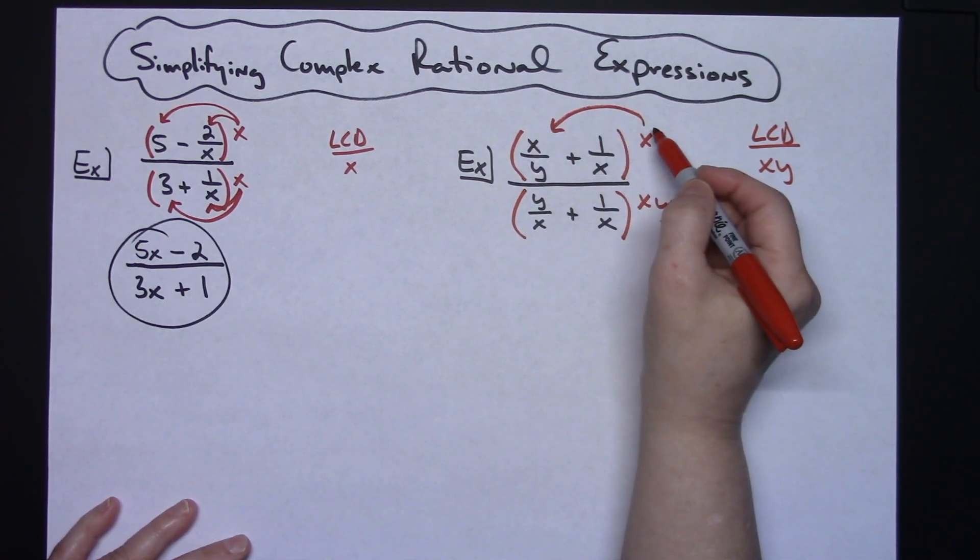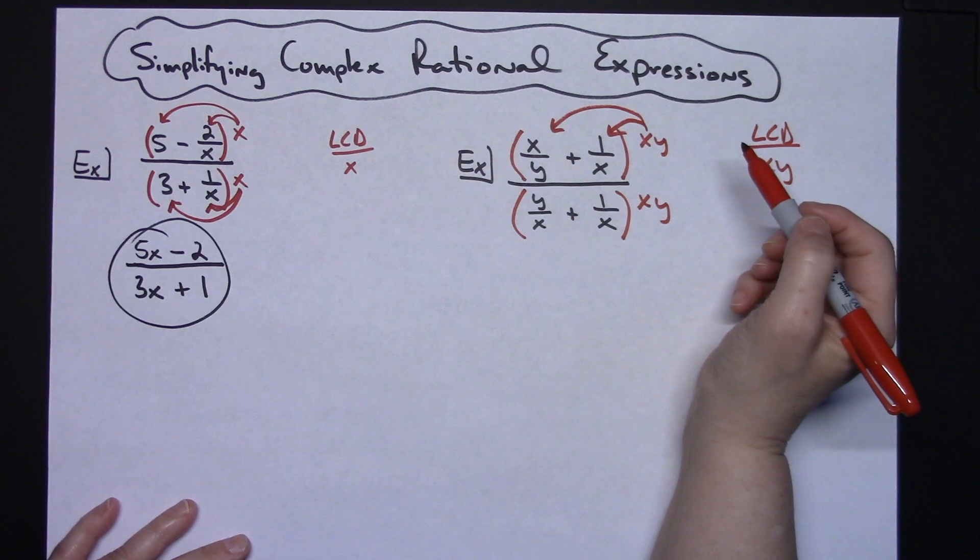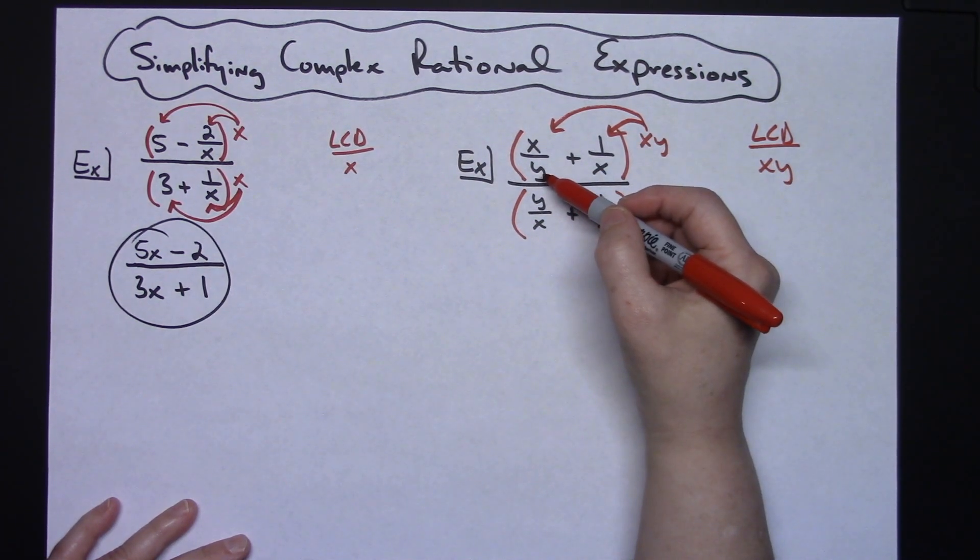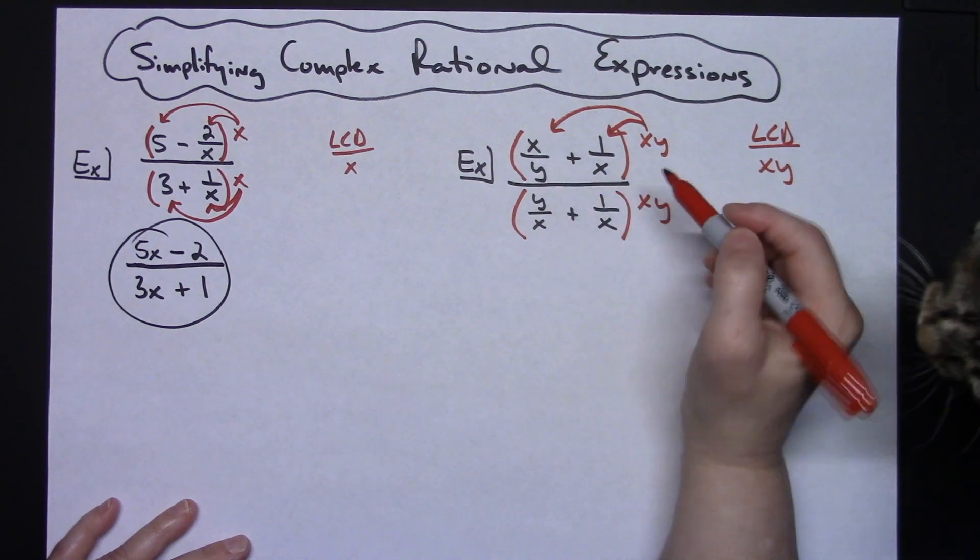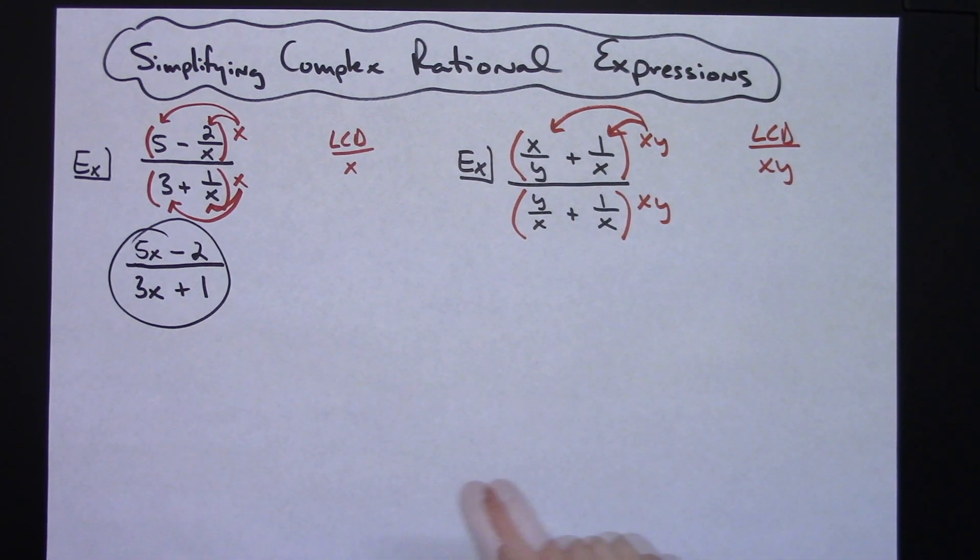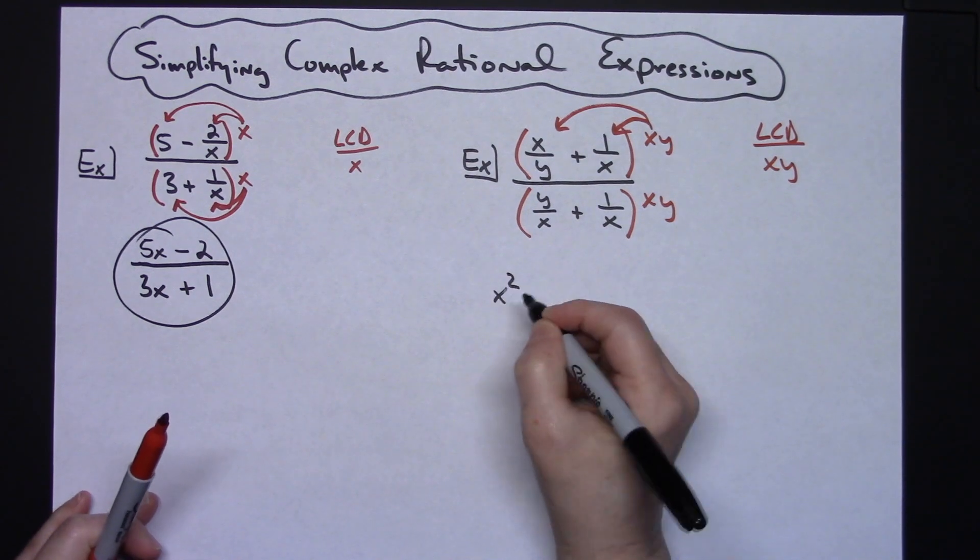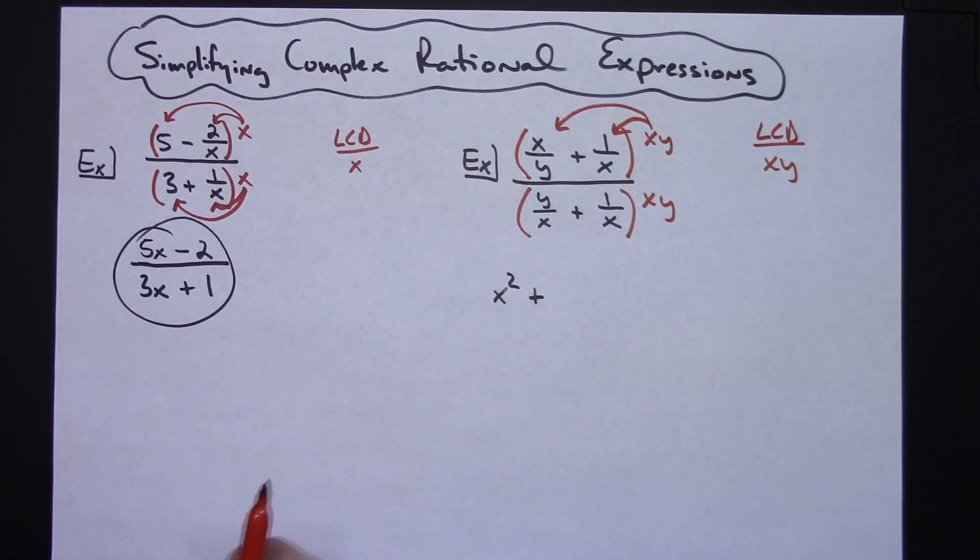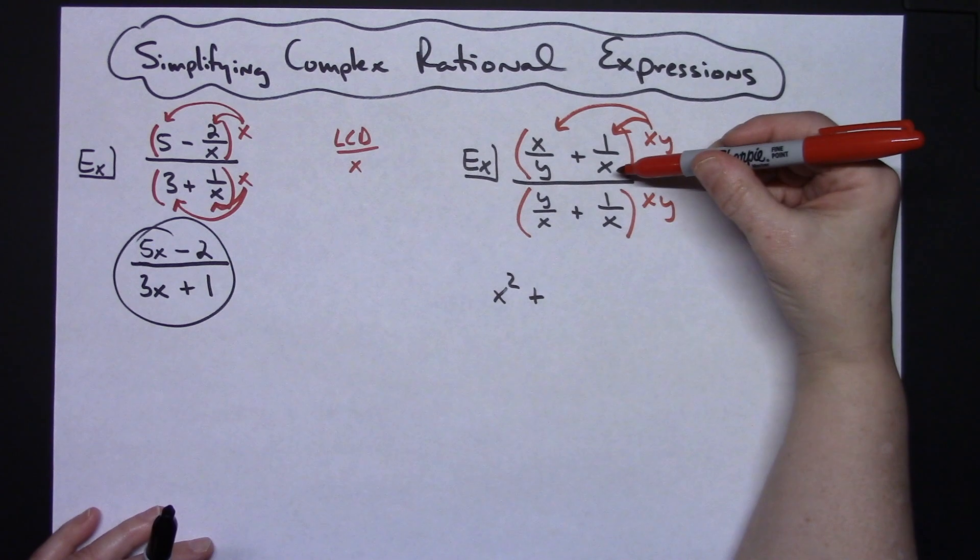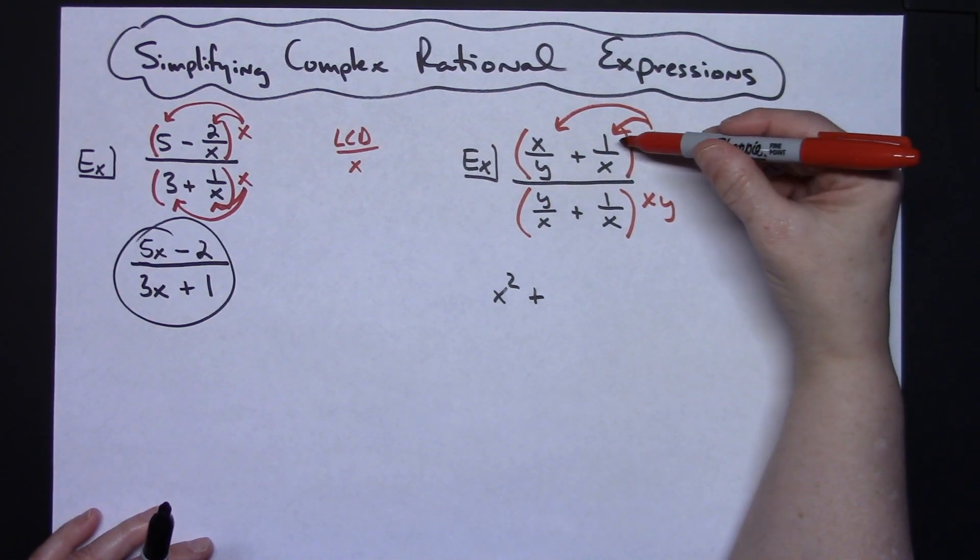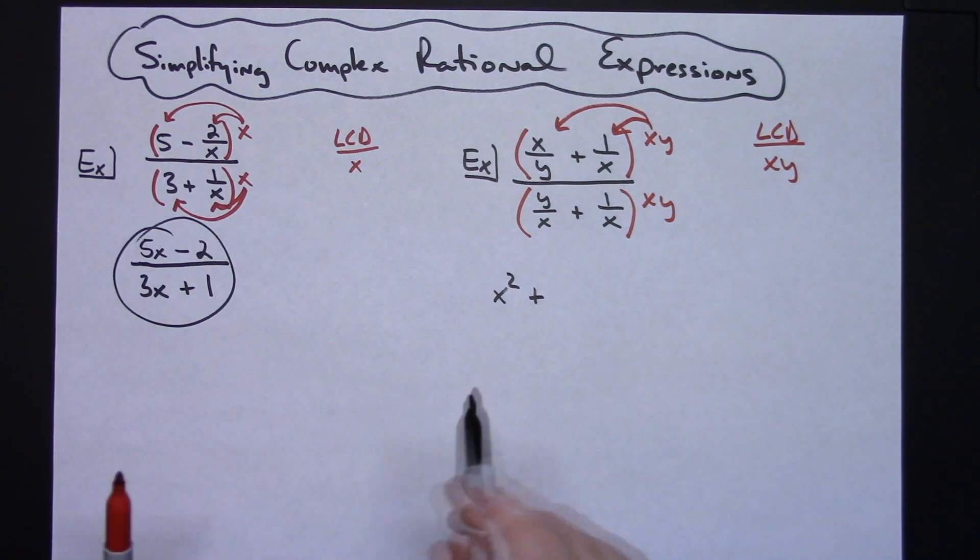Again, I need to distribute to each of those locations. When I do that, this x, y times the y here, those y's are going to cross out, and I'm going to be left with an x squared. I'm going to go ahead and put the plus sign down. When I multiply x times y times this 1 over x, the x's are going to cross out. So I'll have 1 times y, and that's going to leave me with a y.